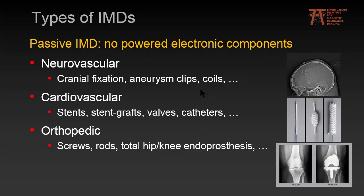There are basically two different types of IMDs. When there are no powered electronic components present, we call them passive IMDs. Examples in neurovascular applications include cranial fixation plates, aneurysm clips and coils. In cardiovascular treatments, stents and stent grafts are common, or valves and catheters. In orthopedics, screws, rods, or total joint endoprostheses are common, like a knee endoprosthesis.